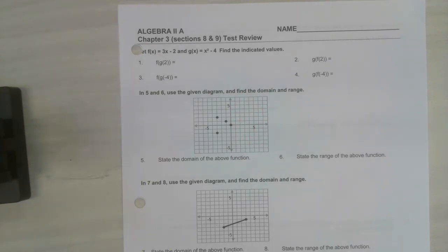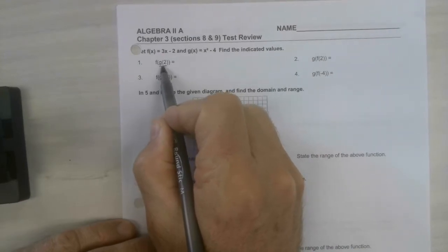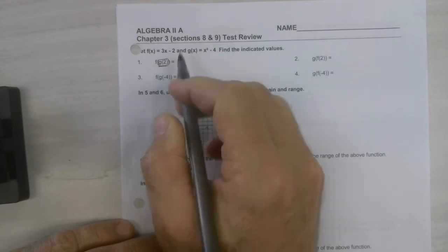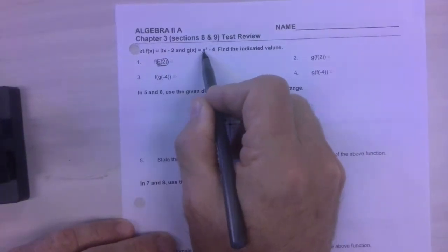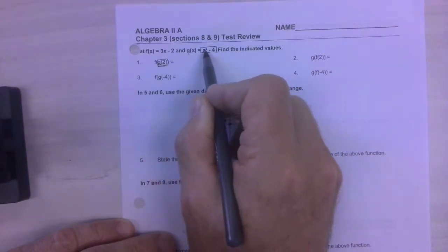Chapter 3, sections 8 and 9 test review. This shouldn't be too bad if you guys have been paying attention, so let's dive in. So how do we do these? We start on the inside and we focus on g of 2, which just means find the function defined by the letter g, which is right here. It really means concentrate on that and plug 2 in for x.